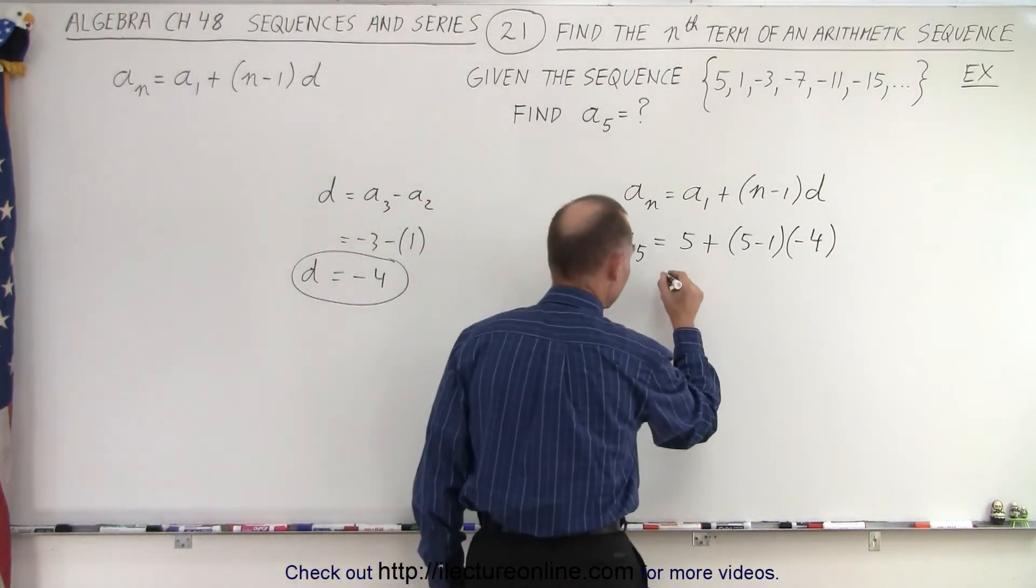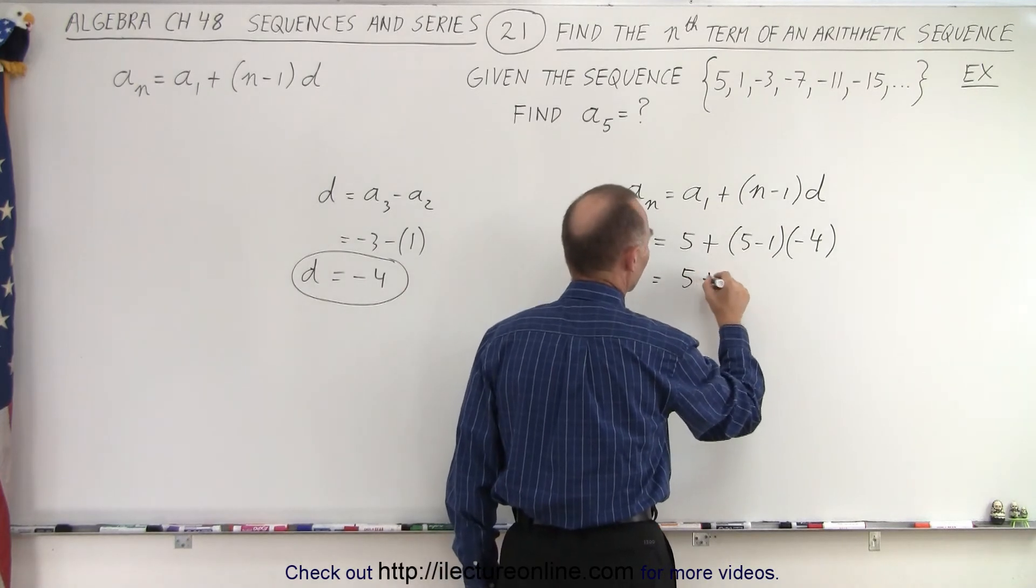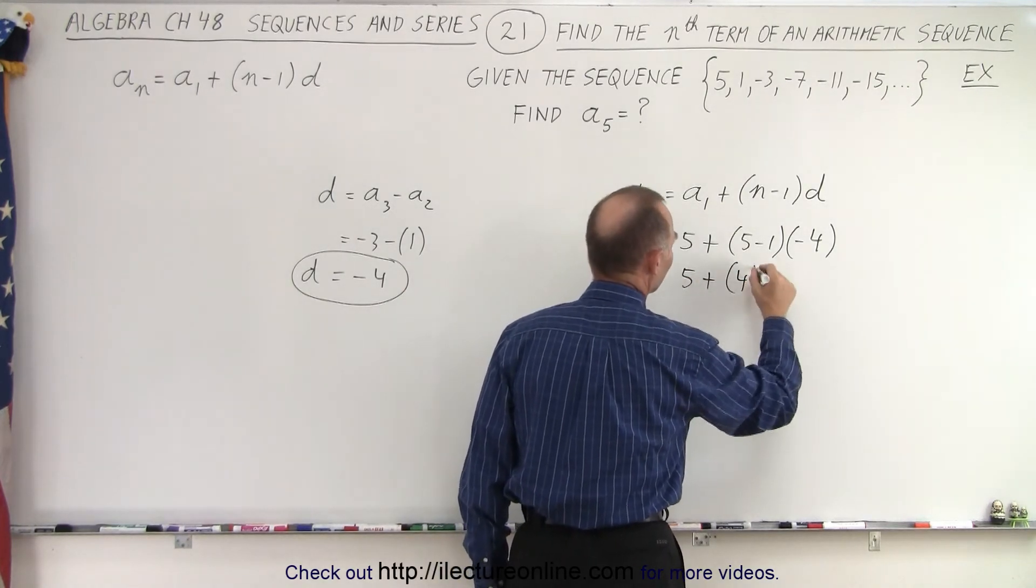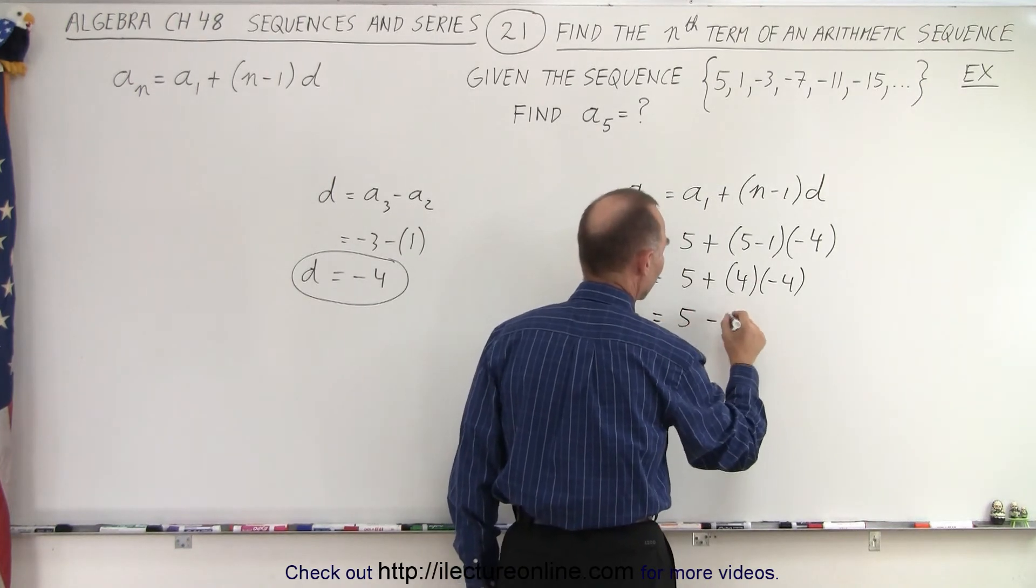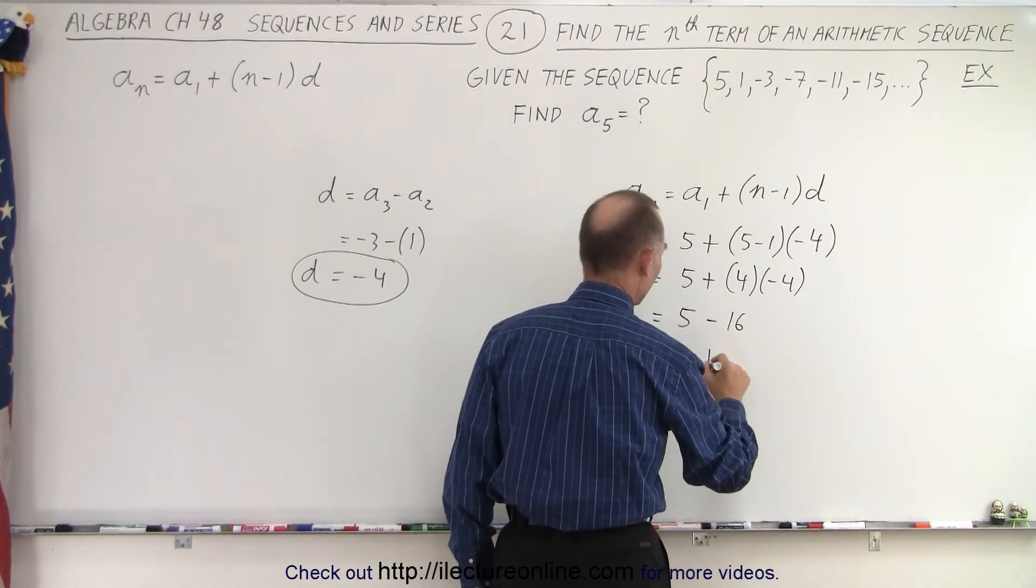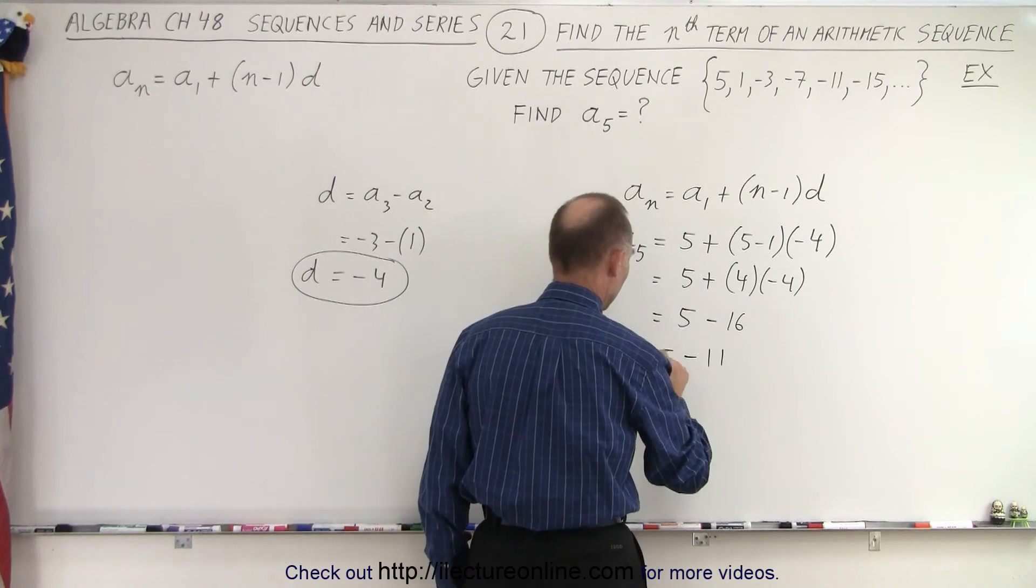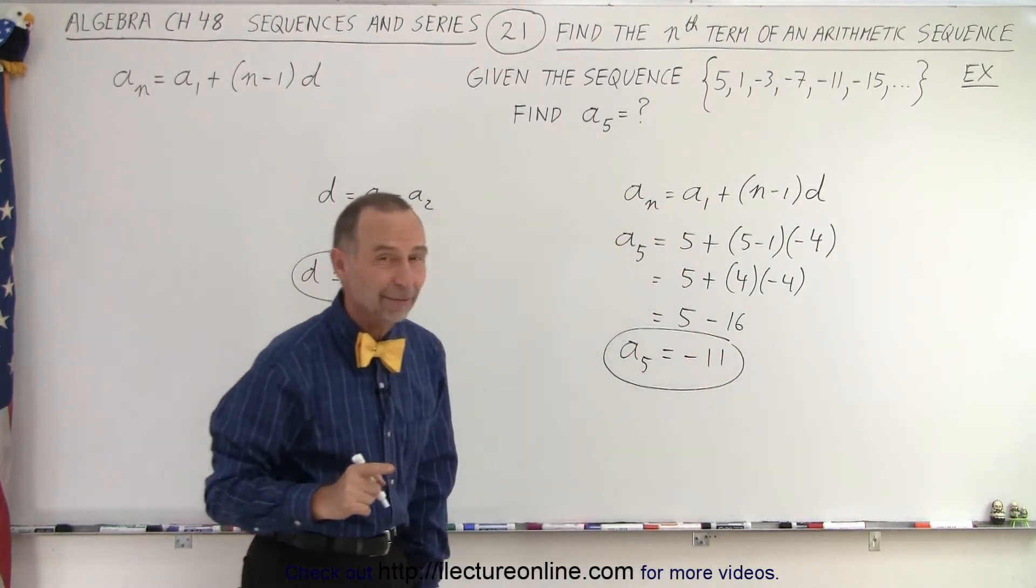All right, let's figure out what that is equal to. This is equal to 5 plus 4 times negative 4 which means that this is equal to 5 minus 16 which is equal to minus 11. So what we're claiming here is that the fifth term in the sequence equals minus 11.